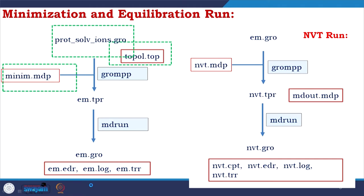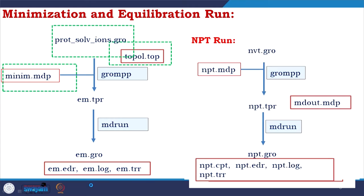With the em.gro file we do equilibration, which is an ensemble run under NVT conditions. We get nvt.gro as the main file, nvt.cpt (checkpoint file), nvt.edr (energy file), nvt.log (log file), and nvt.trr (trajectory file). The same type of equilibration is again performed, but this time under NPT ensemble conditions. We get npt.gro, npt.cpt, npt.edr, npt.log, and npt.trr.